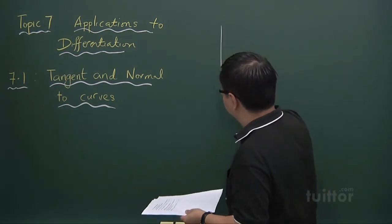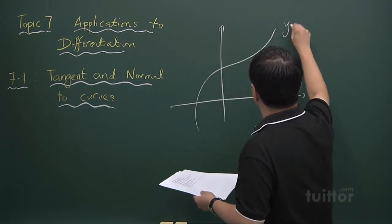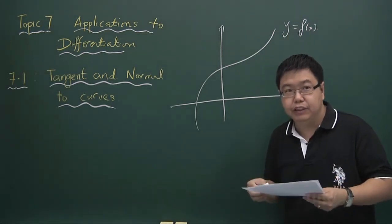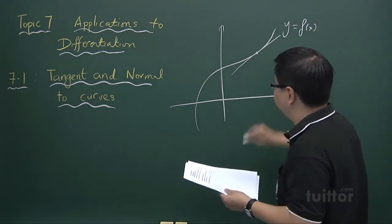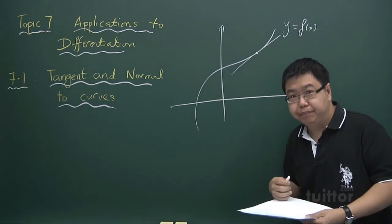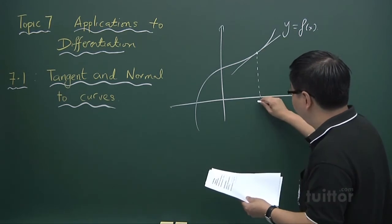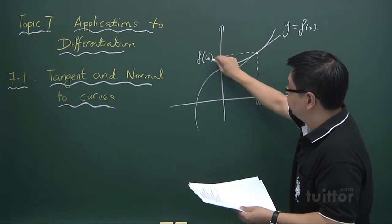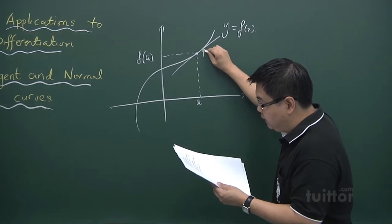Now basically, given a function f(x), we have learned in the previous chapter how to find the gradient of the curve at a particular point by differentiating the function and substituting a particular value into it. So suppose this point x is a and the y value is f of a. Let's call this point P.